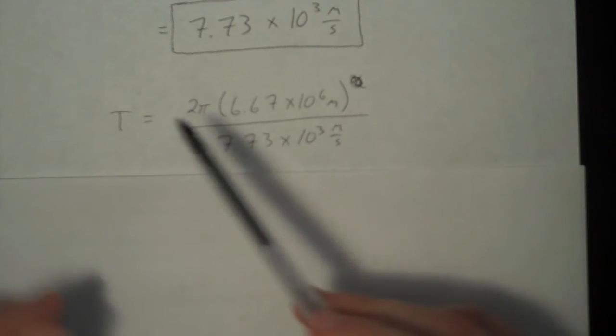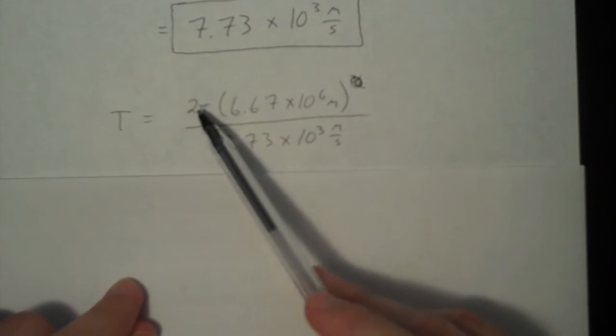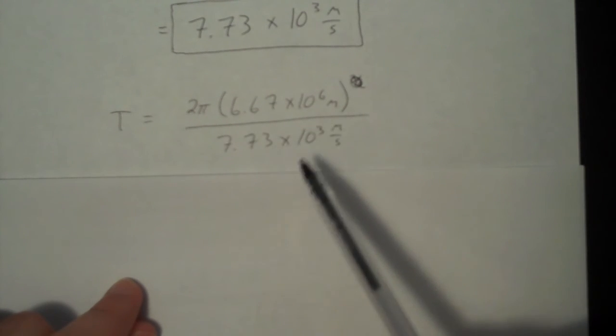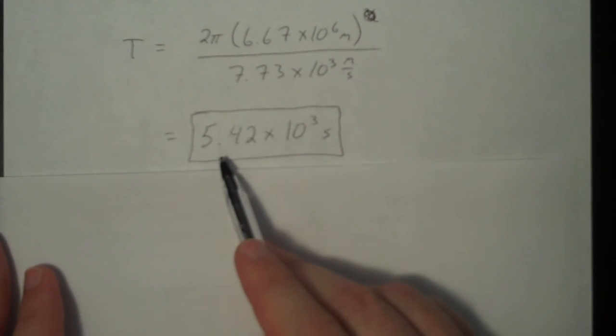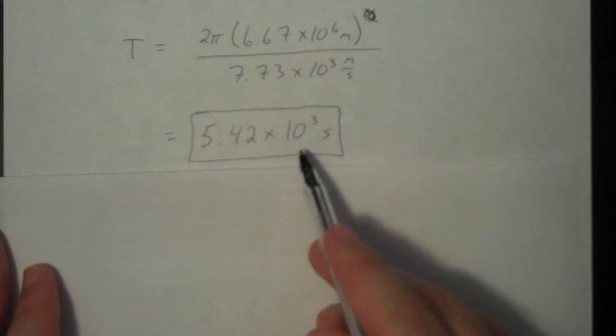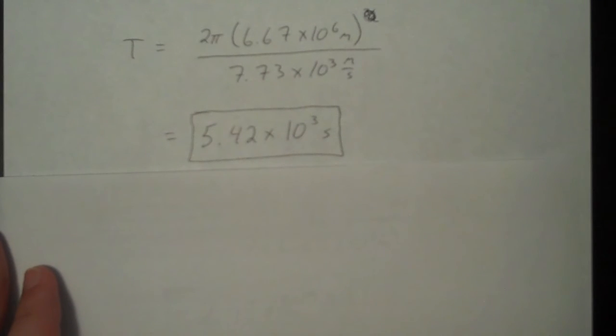This is trivial, right? The period we saw was just 2 pi times the distance divided by the speed. And here is the time, 5.42 times 10 to the third seconds.